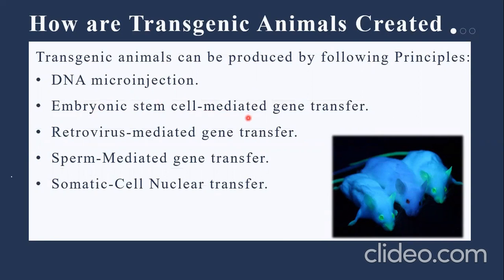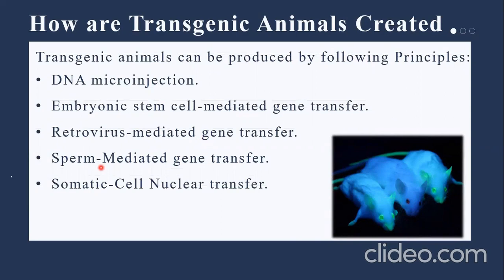Embryonic stem cell mediated gene transfer is the introduction of DNA into embryonic stem cells. Embryonic stem cells can be differentiated into all types of cells when introduced to another embryo. The third one is retrovirus mediated gene transfer, in which we use a retrovirus for the transfer of genes. The fourth one is sperm mediated gene transfer, in which we use sperm as a natural vector to transport exogenous DNA into an oocyte during fertilization to produce a genetically modified organism. We use a linker gene to attach DNA to sperm, which transfers the DNA during fertilization.